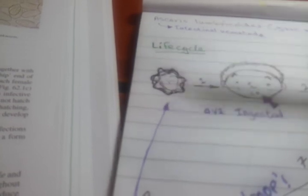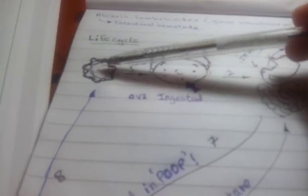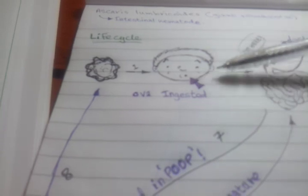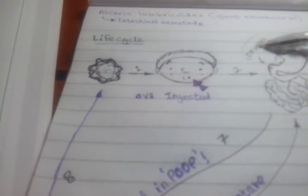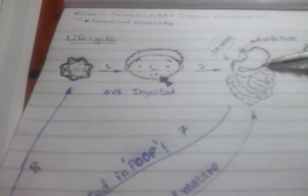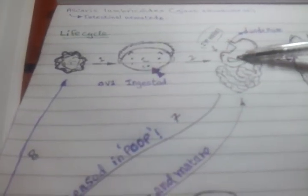The fertile eggs look circular, while the infertile eggs look more elongated. When these ova, or eggs, are ingested by man, they hatch in the duodenum.